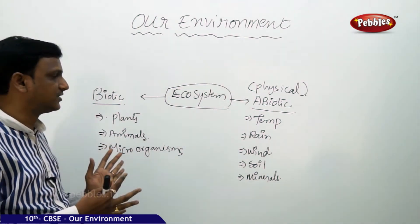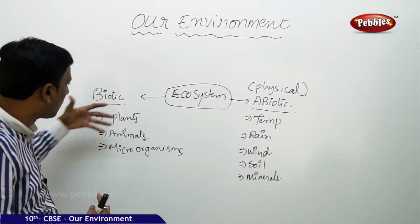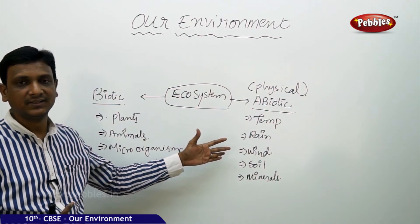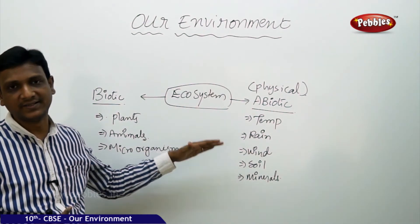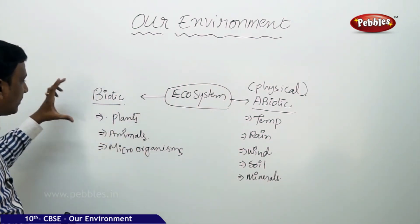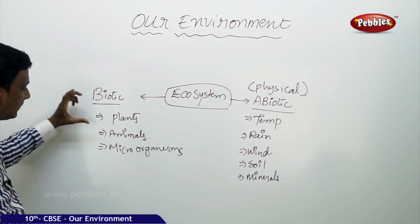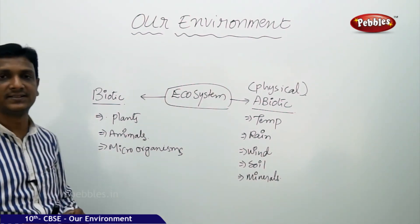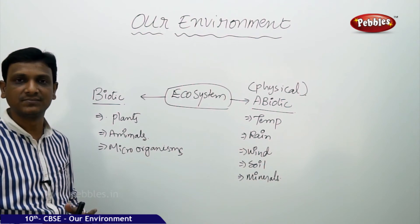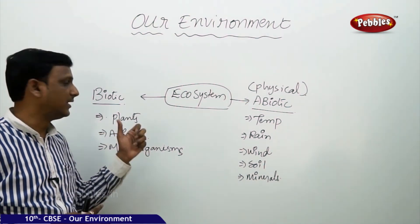The disturbance in an ecosystem — meaning the disruption of relationships between biotic and abiotic components — is caused by human activities, and that is pollution. Now let us see what the biotic components consist of, how plants and animals are categorized, how energy relations are built up, and how food relations are established in an ecosystem.